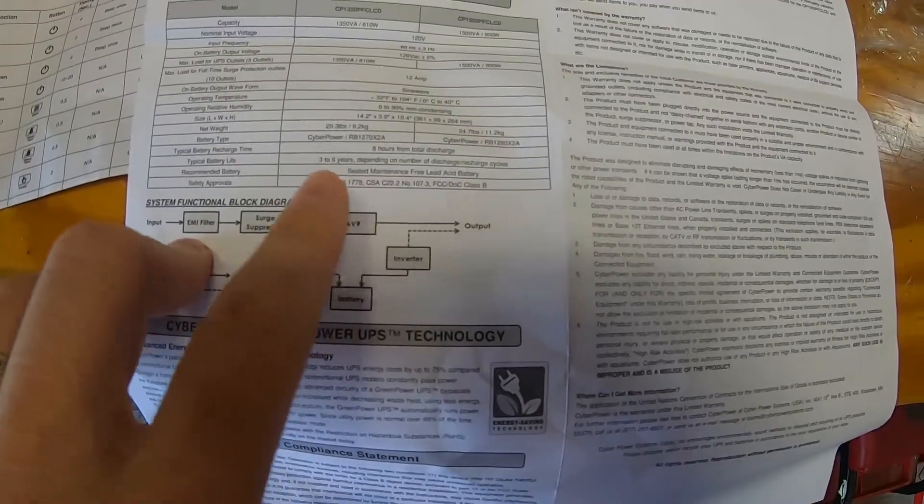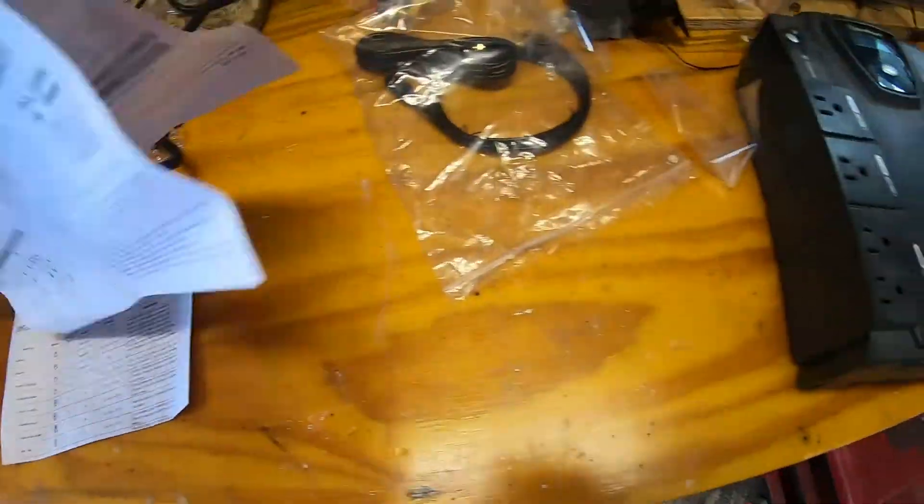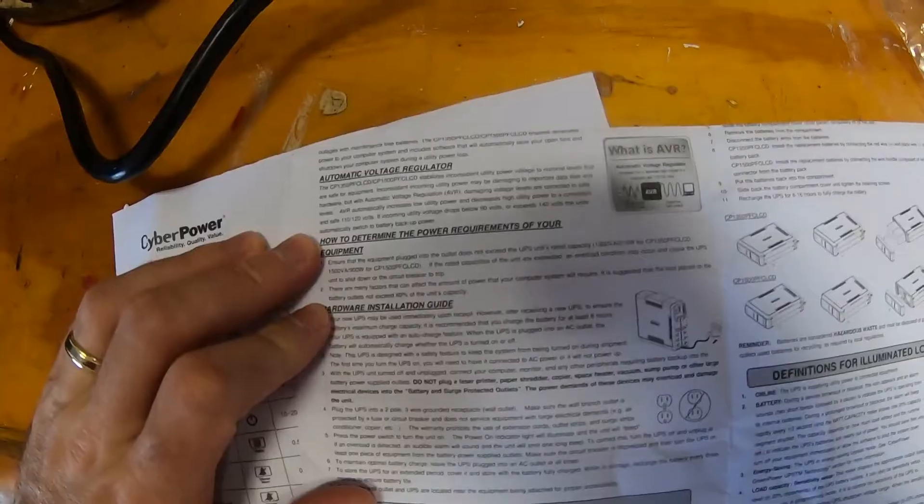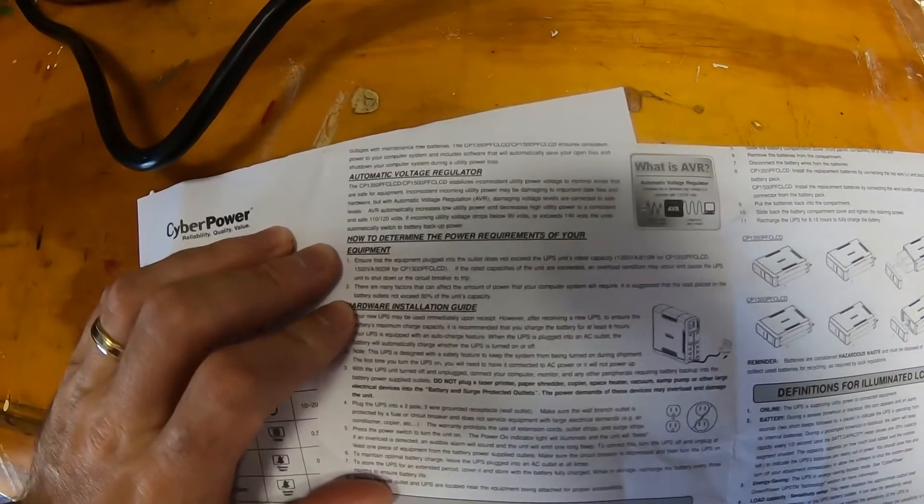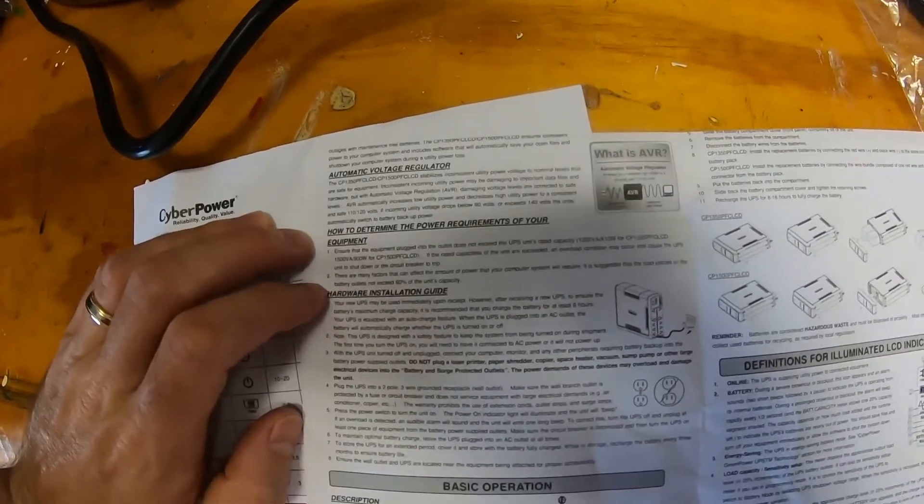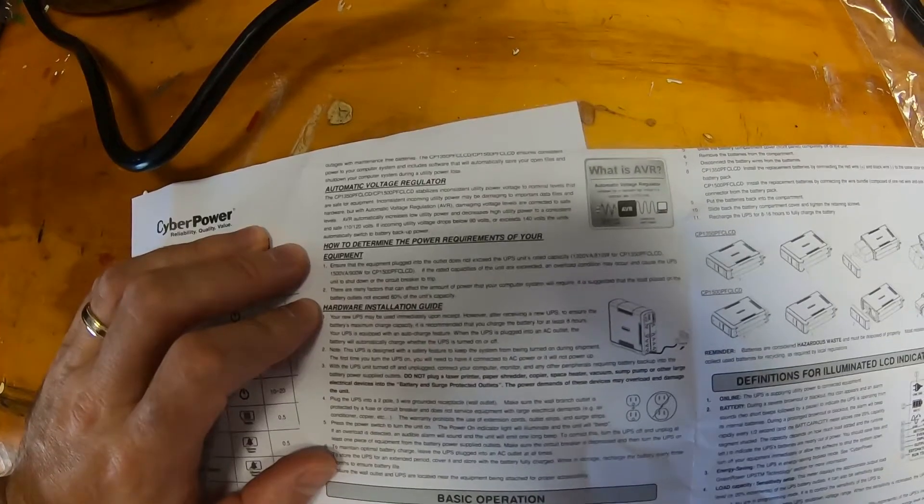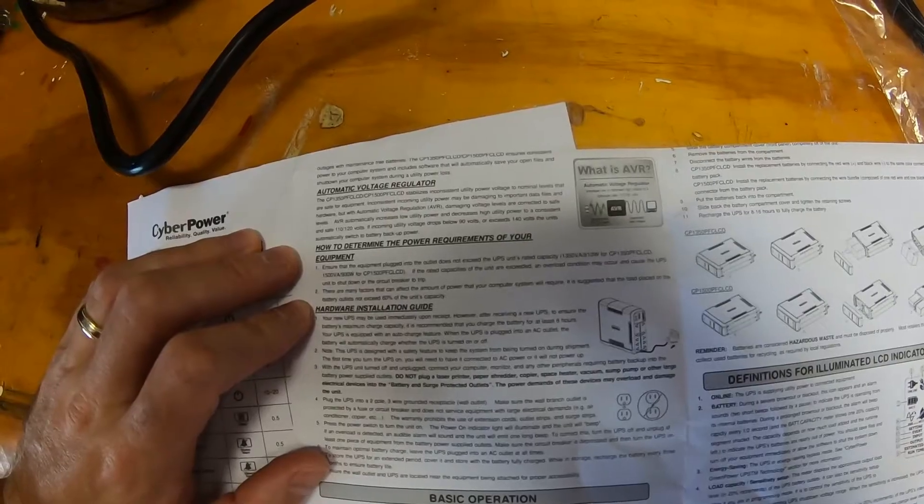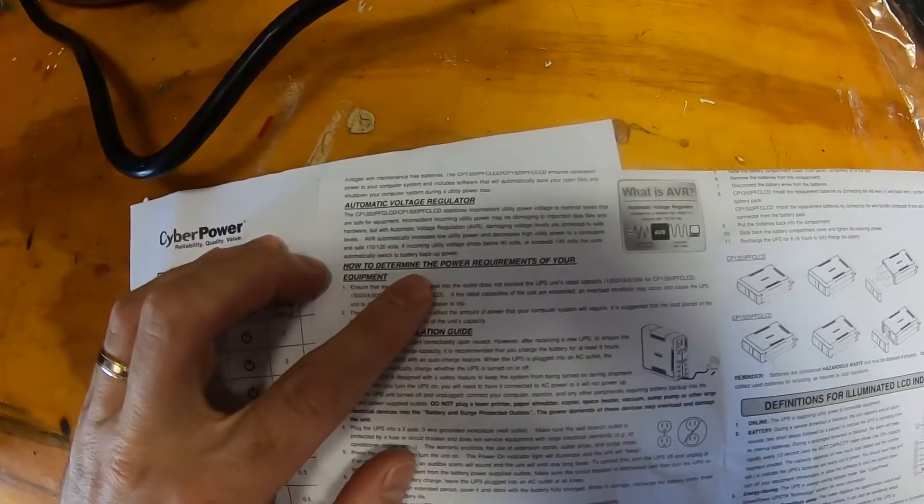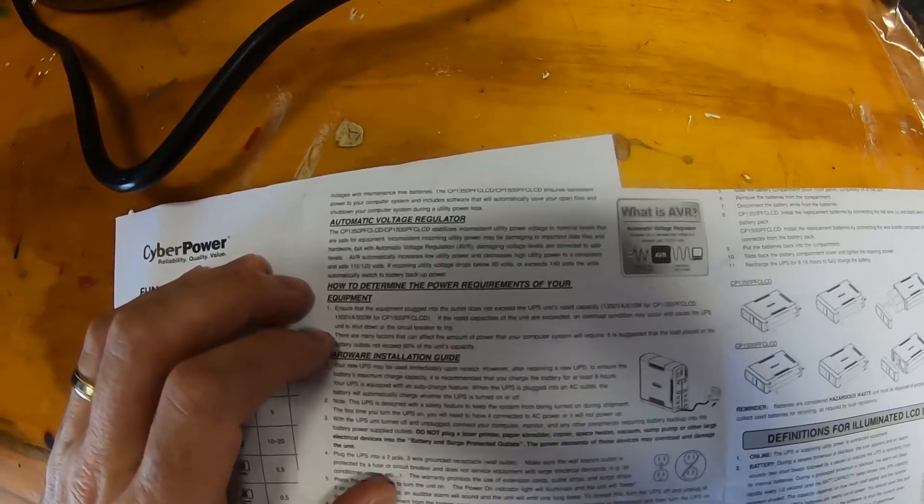Now it does say it has AVR. Which does suggest that at least here that it does condition utility output. Let's see if we can find more about that in here. What is AVR? It stabilizes inconsistent utility power voltage to nominal levels that are safe for equipment. Inconsistent incoming utility power may be damaging to important data files and blah blah blah. AVR automatically increases low utility power and decreases high utility power to a consistent and safe 110 to 120 volts. If incoming utility voltage drops below 90 volts or exceeds 140 the unit automatically switches to battery power.